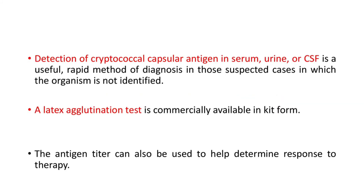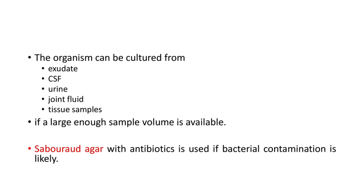Detection of cryptococcal capsular antigen in serum, urine, or CSF is a useful rapid method of diagnosis in suspected cases in which the organism is not identified. A latex agglutination test is commercially available in kit form, and antigen titers can also be used to help determine response to therapy. The organism can be cultured from exudate, CSF, urine, joint fluid, or tissue samples. If a large enough sample volume is available, Sabouraud's medium with antibiotics is used if bacterial contamination is likely.